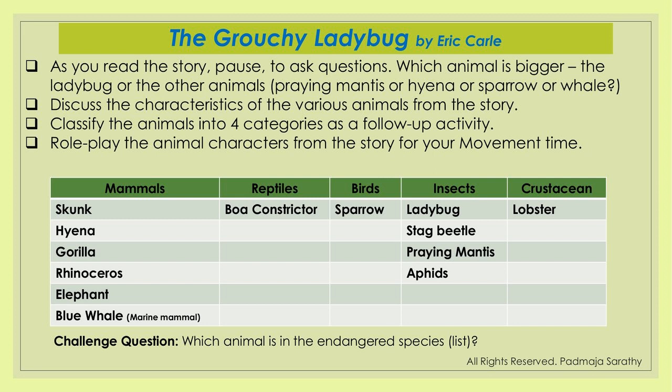Ask questions like: which animal is bigger? Is the ladybug bigger, or is it the praying mantis that's bigger? Or the elephant? Or the whale? Or the sparrow? Or the hyena? Many children may not have even seen a picture of a hyena — that may be a new animal name for them. This is a great opportunity to discuss the various characteristics of these different animals. Then you can set up a graph with categories: mammals, reptiles, birds, insects, and crustaceans. The skunk, hyena, gorilla, rhinoceros, blue whale, boa constrictor, sparrow, ladybug, stag beetle, praying mantis, aphids, and lobster are all animals in the story.